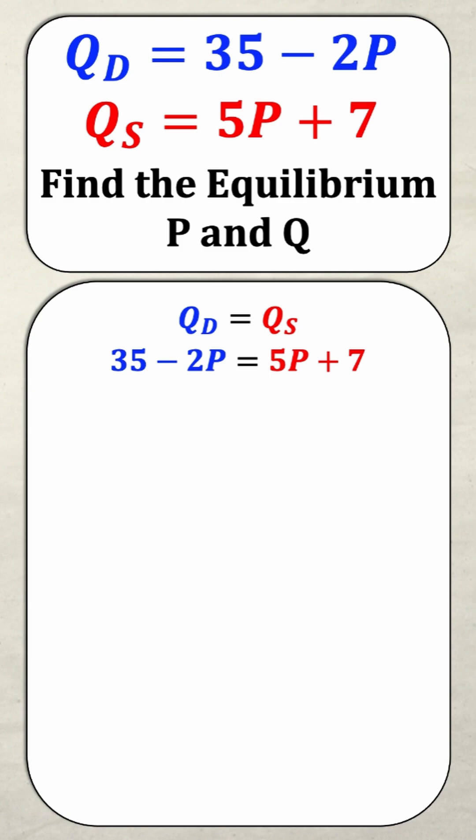Well now you'll notice I only have one equation and one variable, price. So now I can collect my like terms and solve. If I collect my like terms, it'll give me this following line. 35 minus 7 is equal to 5P plus 2P.